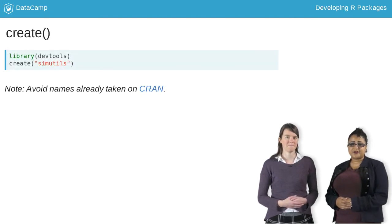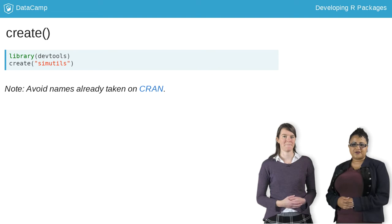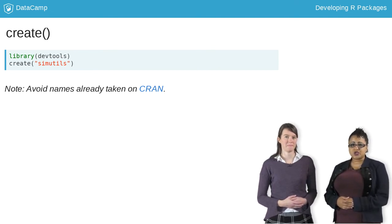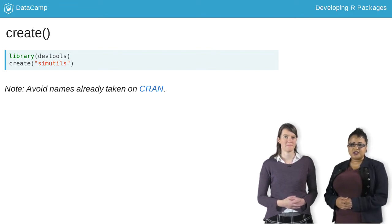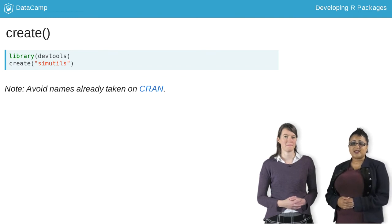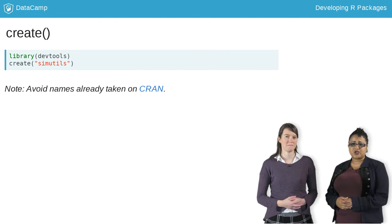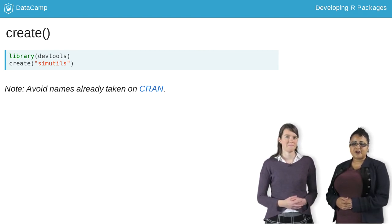The create function will create the basic package structure for us, generating a namespace file, description file, and the R directory. It doesn't create the man directory yet — you'll see that that happens later. To use create, all you need to do is tell it where to create the package and what name it should have. In this example, we will create a package called simutils in a new folder in the current working directory. The name of the folder you provide becomes the name of your package.